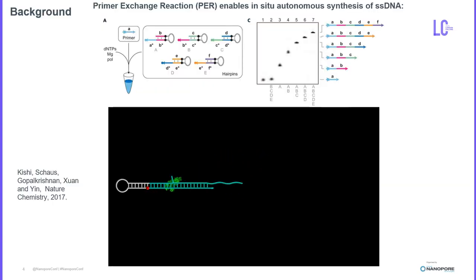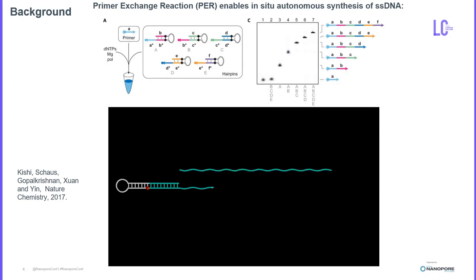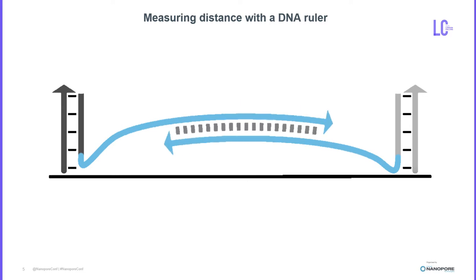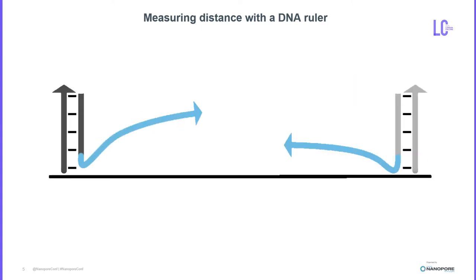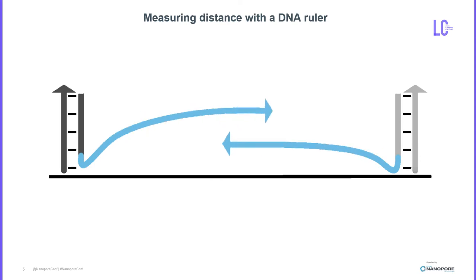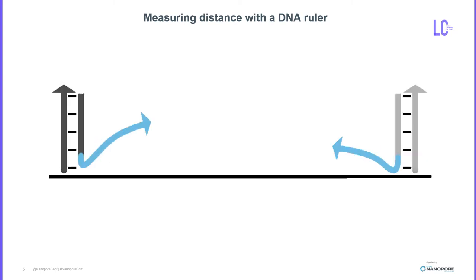The basis of the DNA nanoscope is the primer exchange reaction that enables in-situ autonomous synthesis of single-stranded DNA. As shown in this video, short hairpins repeatedly add the stem encoded sequence with the help of a polymerase and dNTPs. At the heart of the DNA nanoscope is a molecular ruler that measures the distance between two targets labeled with DNA handles and that have recording primers hybridized to them. The PER reaction takes place between the primers — the arms randomly meet, hybridize, and extend on one another creating a distance record. These records are ultimately displaced and released into solution.